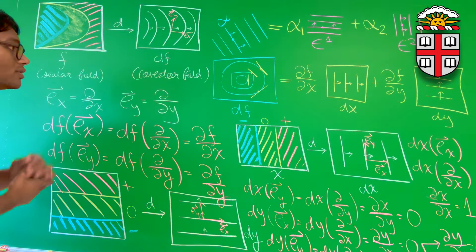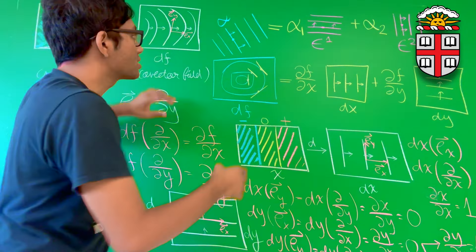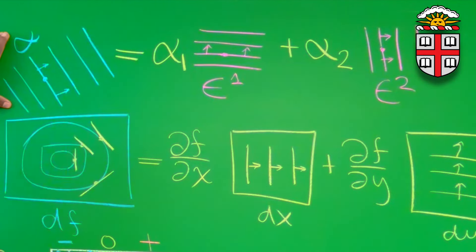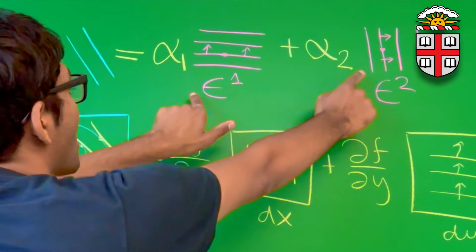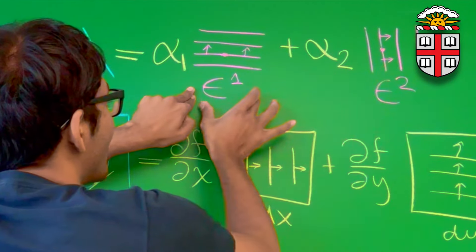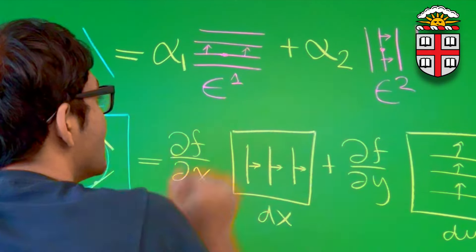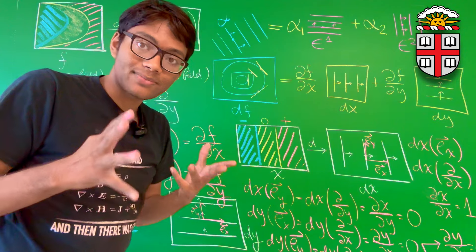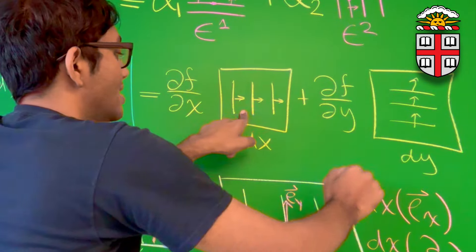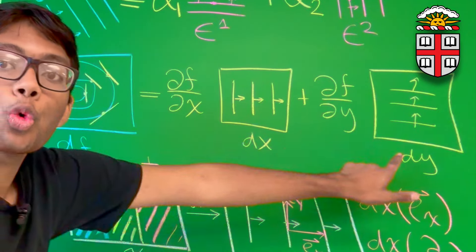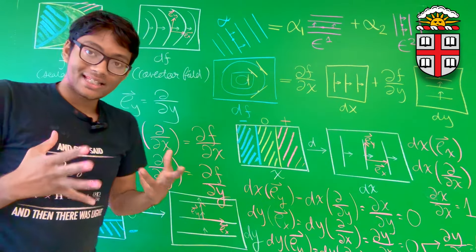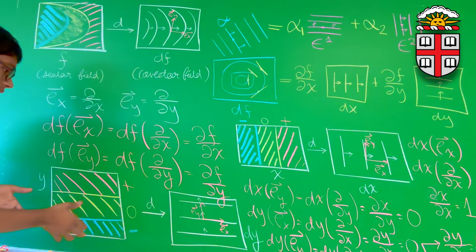Our ultimate goal is: just as we were able to express a given co-vector alpha as a linear combination α₁e¹ + α₂e², we'll be able to express any differential form df as a linear combination of dx and dy. These are called your dual basis vectors.